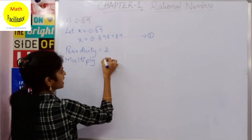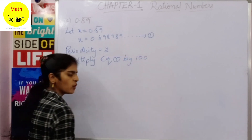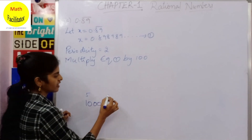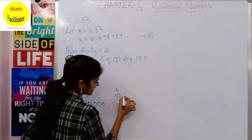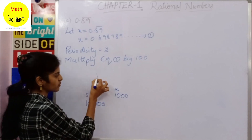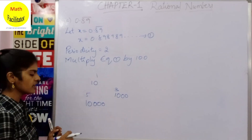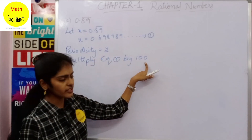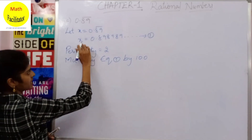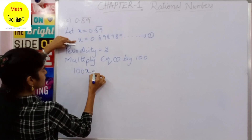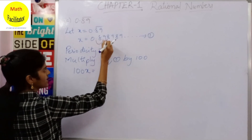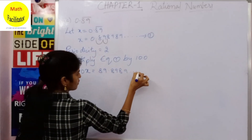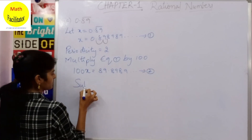Since the periodicity is 2, multiply equation 1 by 100. If periodicity were 5, you'd multiply by 1 followed by 5 zeros; if 3, by 1000; if 1, by 10. The number of zeros equals the periodicity. Multiplying by 100 shifts the decimal two places to the right, giving 100x = 89.8989… — call this equation 2.